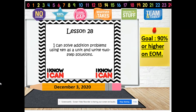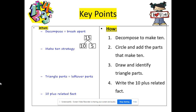So very simple. We're going to review the making 10 strategy, and then we're going to write our solution as 10s and 1s. What do we need to know? We need to know what decompose means, which is break apart. We also need to know what the make 10 strategy is, which we've worked with before. We also need to know what triangle parts are, which are the parts that we have left over, and what a 10 plus related fact is — which is just an addition fact that starts with 10 and your other leftover part.